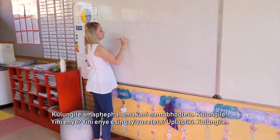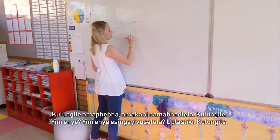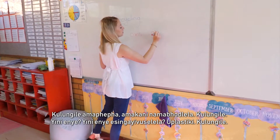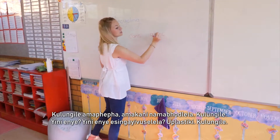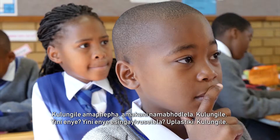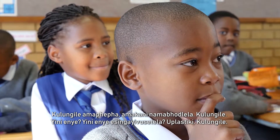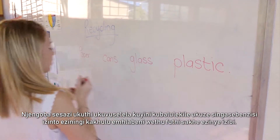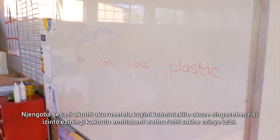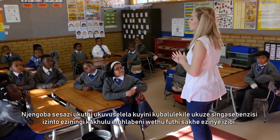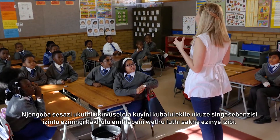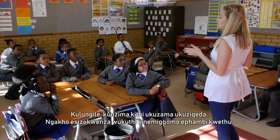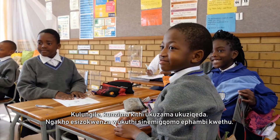Paper, cans and glass. What else can we recycle? Plastic. So now we know what recycling is. It's very important so that we don't use too many things on our planet and create more rubbish. It's difficult for us to try and get rid of it.